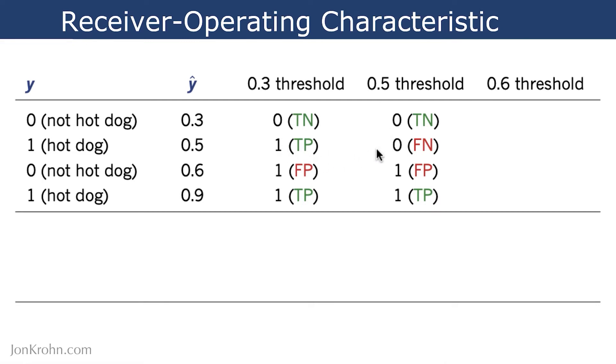So this only flips one of the predictions. So this true positive stays the same. This false positive stays the same. This true negative stays the same. The only one that's changed is this one here,